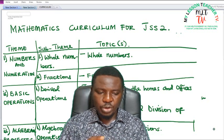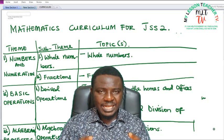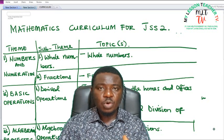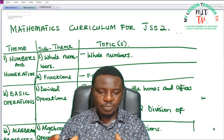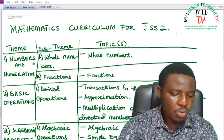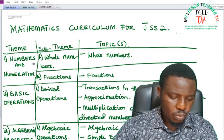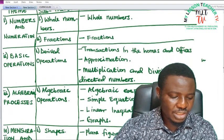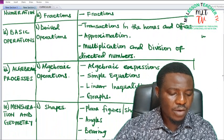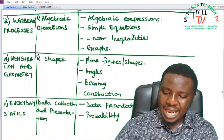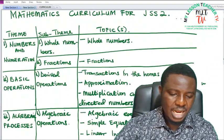The GSS2 curriculum is divided into themes, and these themes are further divided into sub-themes. From the sub-themes, we derive our topics. For GSS2, we have themes like Numbers and Numeration, Basic Operations — same as GSS1 — as well as Algebraic Processes, Mensuration and Geometry, and Everyday Statistics.